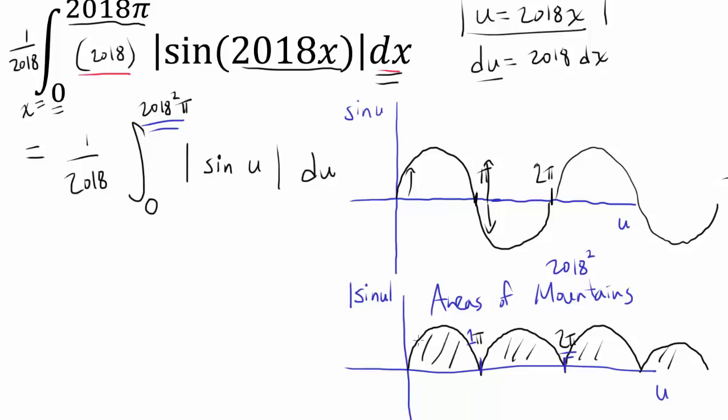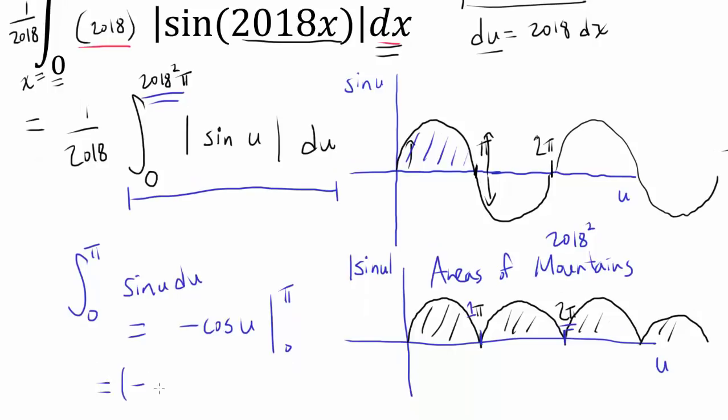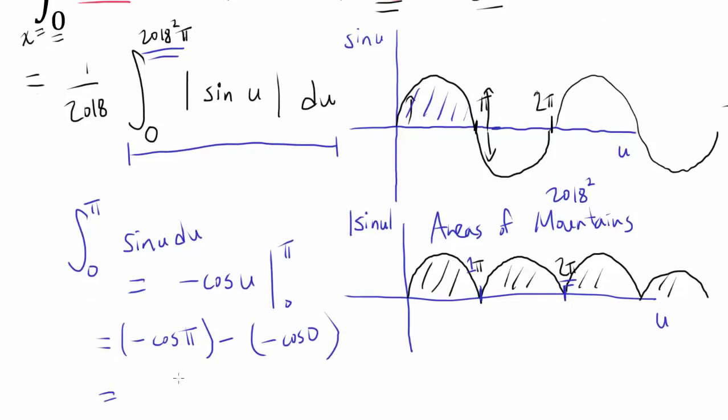So if we can find one area, area of one of these mountains, we simply have to multiply by 2018 squared to evaluate this integral. So what's the area of one of the mountains? Well, that's going to be integral from 0 to π of absolute value of sine of u. Or we know sine of u and absolute value of sine of u are the same from 0 to π. So we can simply use sine of u du. And this is relatively easy to evaluate. Negative cosine of u from 0 to π. So we have negative, negative cosine of π minus negative cosine of 0. And we know cosine of π is negative 1. So we have positive 1 minus cosine of 0 is 1. So we have negative 1. Or 2, 1 plus 1 is 2. So we know area of one of these mountains is 2.